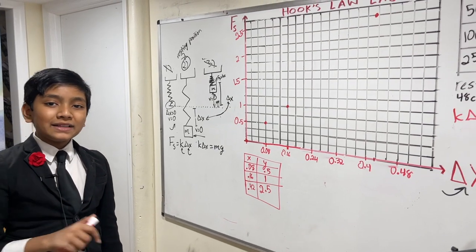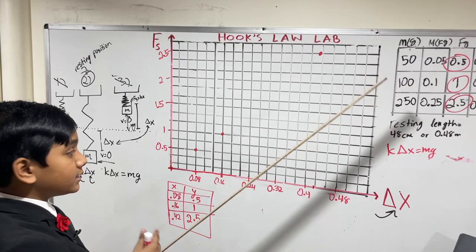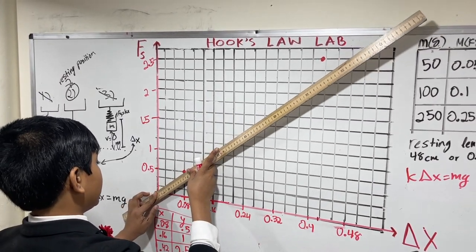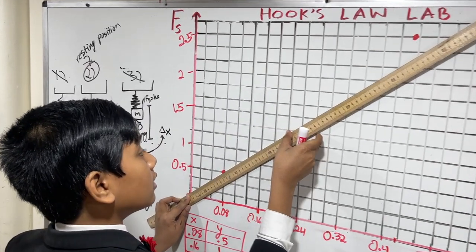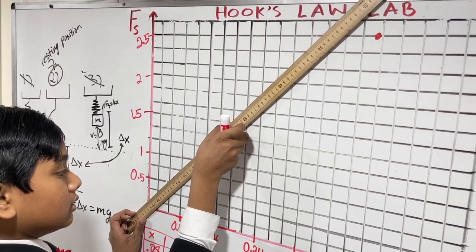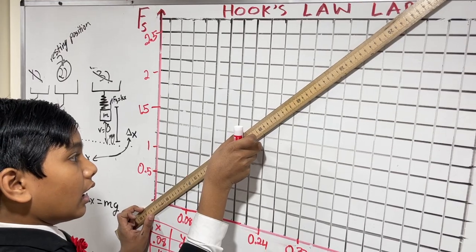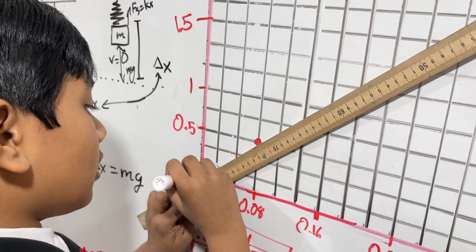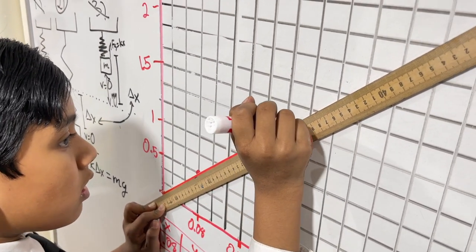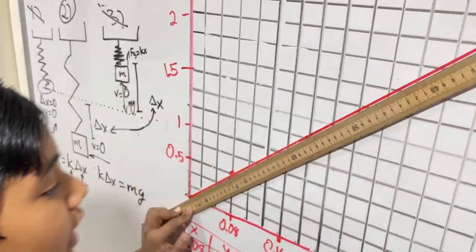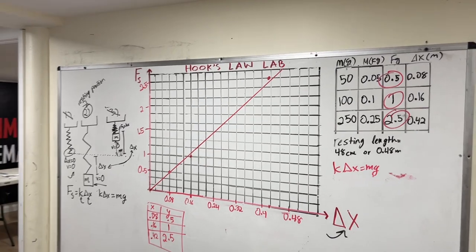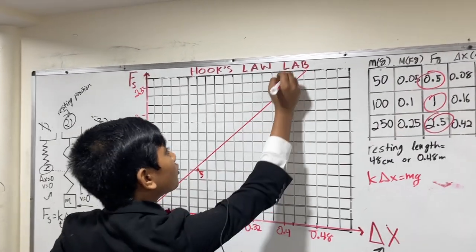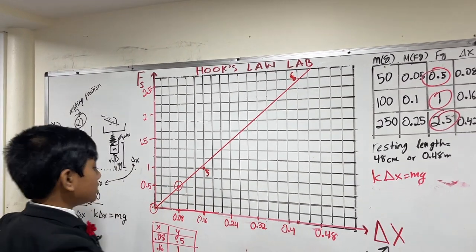All right, 0.08, 0.5, that on this graph is going to be this point. Okay, so now, 0.16, 1 is this point right here. And 0.42, 2.5, 0.42 is a little trickier to find. And those are our three data points. I guess we could say 4 because of 0, 0, but it doesn't really matter either way. Now, let's grab our meter stick and draw a best fit line.